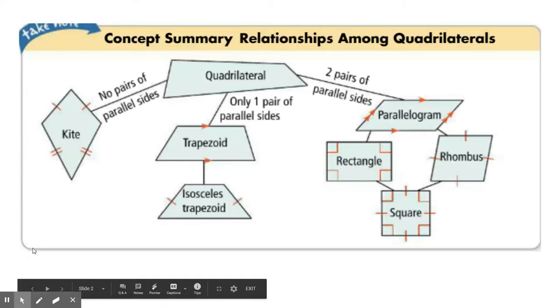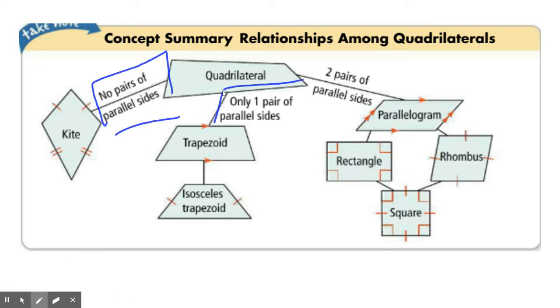So to begin, we'll go back to this hierarchy of quadrilaterals. Remember that the big distinction is the number of parallel sides: no pairs of parallel sides, one pair of parallel sides, or two pairs of parallel sides.